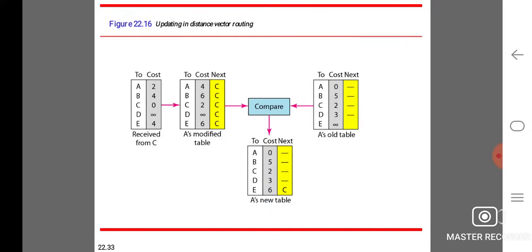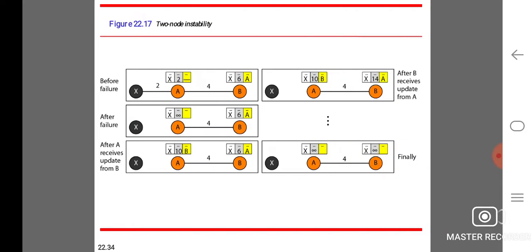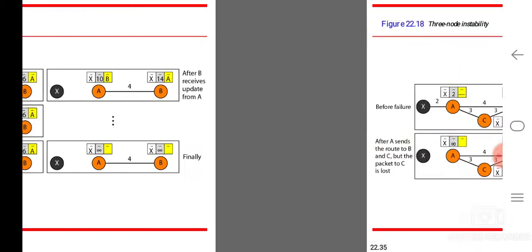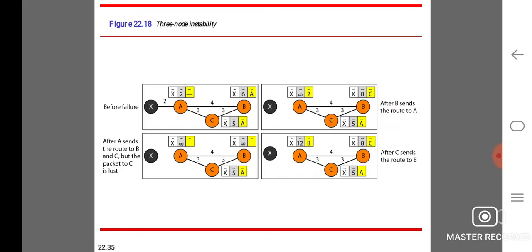Updating in distance vector routing. The table received from C is modified by A and compared with A's old table, and finally we are forming A's new table. Two node instability: before failure, after failure, and after A receives updates from B.